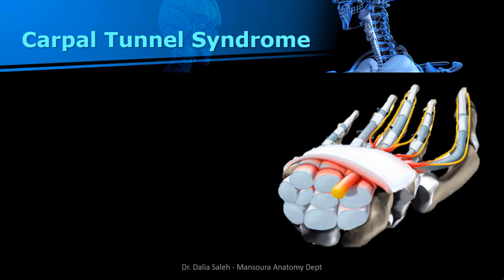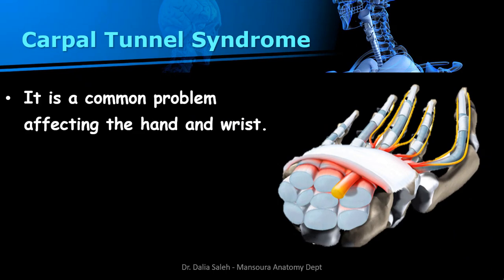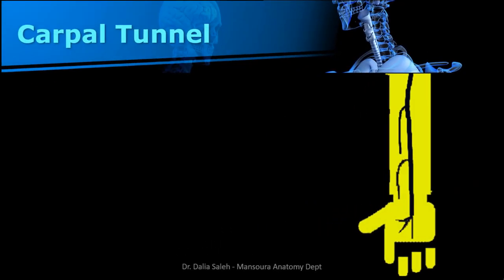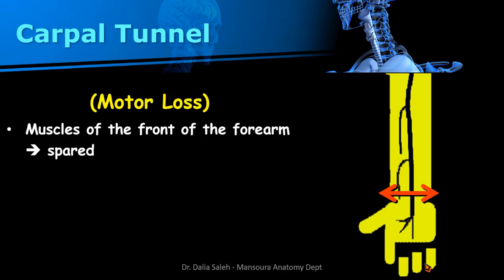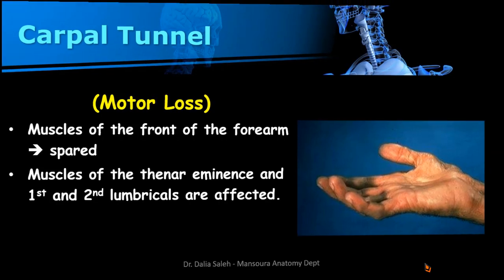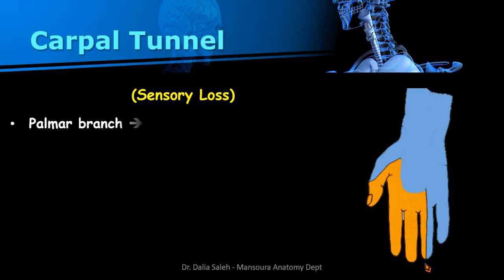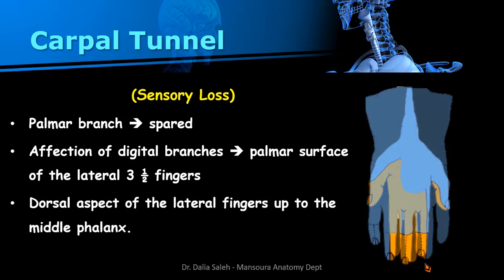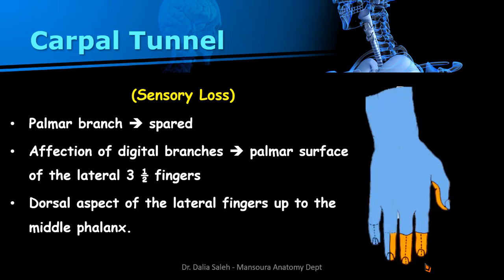In carpal tunnel syndrome, a common problem affecting the hand and wrist, symptoms begin when the median nerve gets squeezed within the carpal tunnel in front of the wrist joint. If the lesion is at the carpal tunnel, the muscles of the front of the forearm will be spared, while the muscles of the thenar eminence and the first and second lumbricals will be paralyzed. The palmar branch will be spared, but the palmar digital branches will be affected, causing sensory loss over the palmar surface of the lateral three and a half fingers and the dorsal aspect of these fingers up to their middle phalanges.